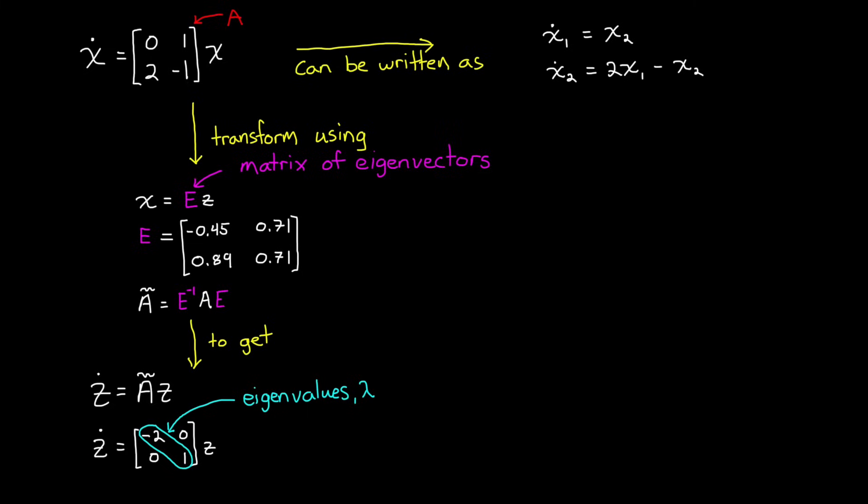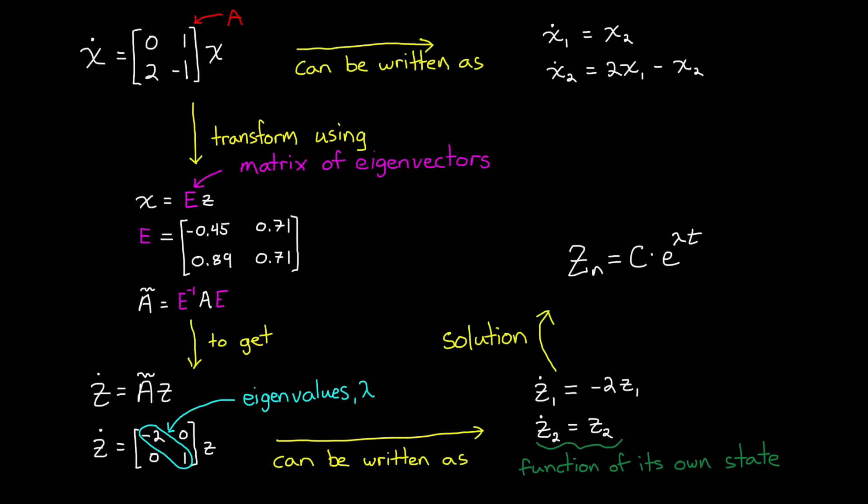When the A matrix is written in diagonal form, it's easy to see that what we're left with is a set of first order differential equations where the derivative of each state is only affected by that state and nothing else. And here's the cool part. The solution to a differential equation like this is in the form z equals a constant times e to the lambda t, where lambda is the eigenvalue for that given state variable.